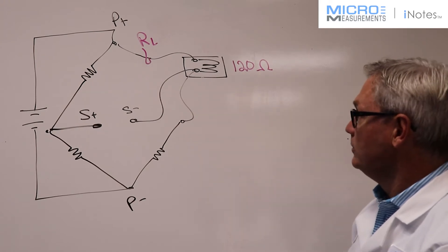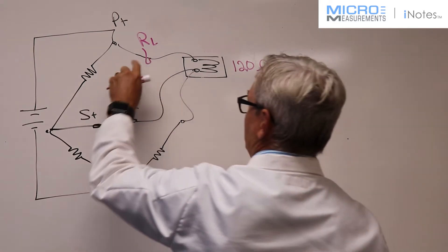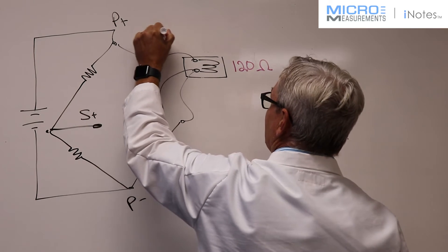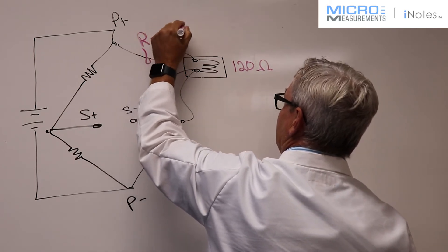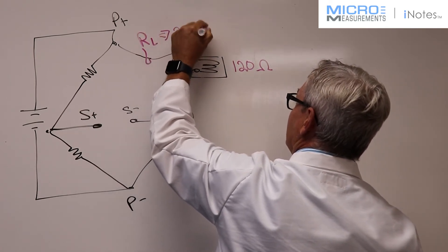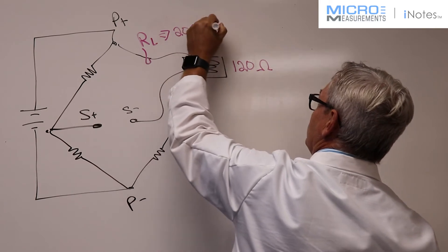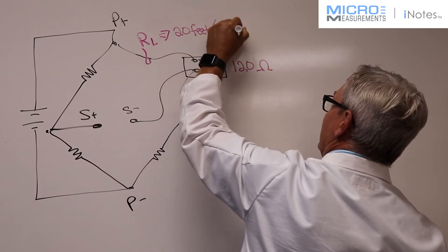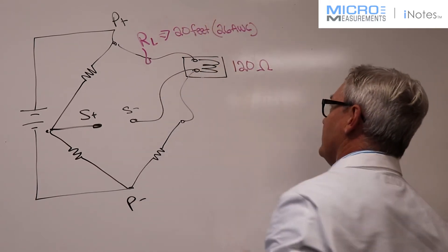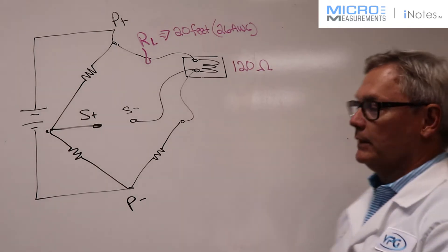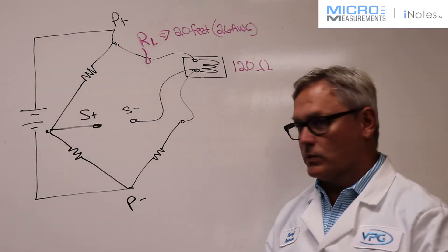And we're going to assume that this wire is about 20 feet of a 26 gauge wire. And that's pretty typical for the lead wire connections that we use on strain gauges.